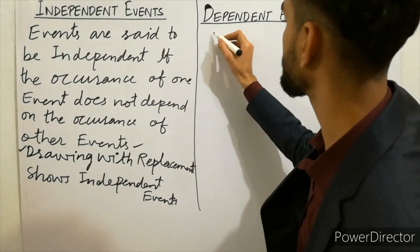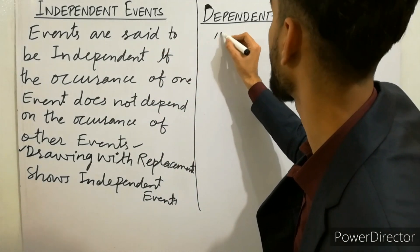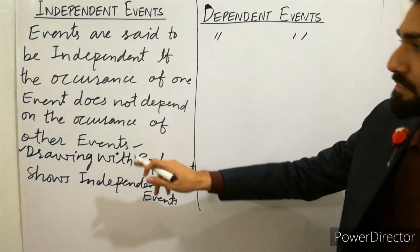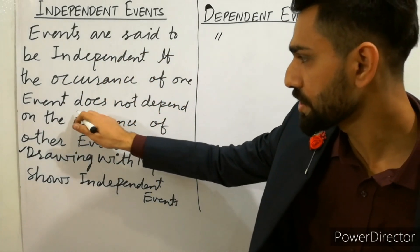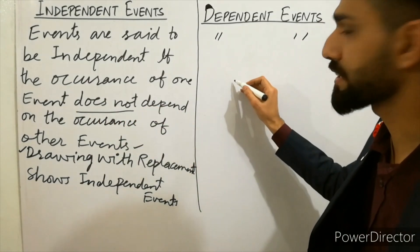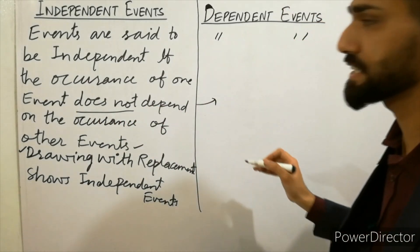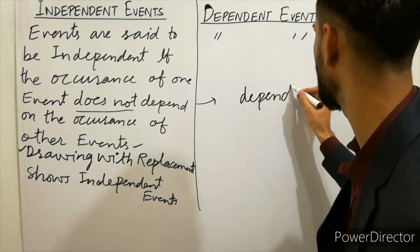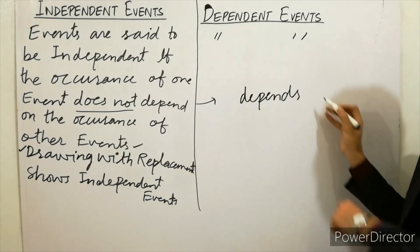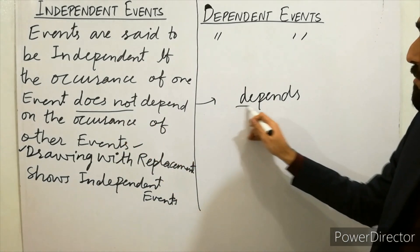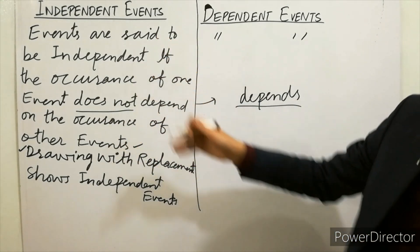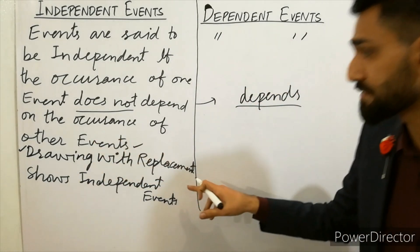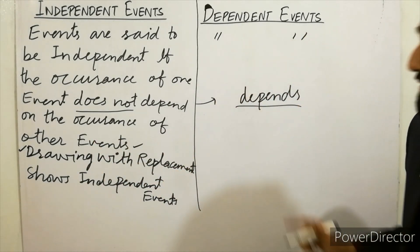Events are said to be independent if the occurrence of one event does not depend on the occurrence of other events. Similarly, dependent events depend on the occurrence of other events. Events which depend on the occurrence of other events are called dependent events.